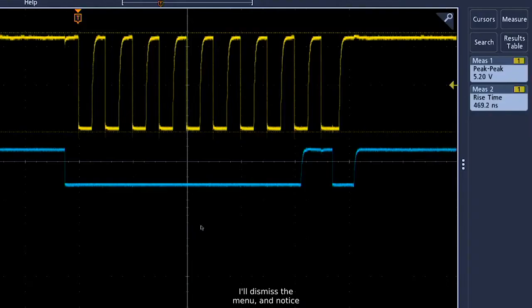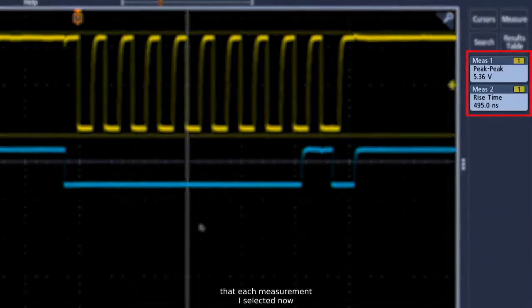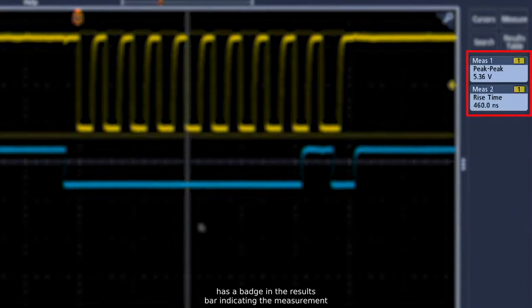I'll dismiss the menu and notice that each measurement I selected now has a badge in the results bar indicating the measurement results.